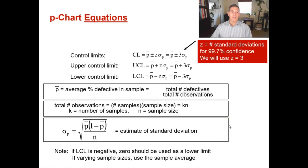For a P chart, your control limit equals your P-bar plus or minus Z multiplied by the standard deviation of P. For this course, Z is given to you as 3, meaning you have a 99.7% confidence level. Remember that — put it in your notes. When taking quizzes and exams, Z is always equal to 3 unless a different confidence level is given to you.